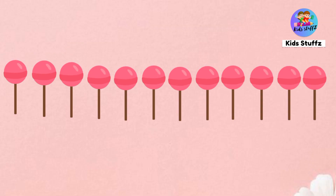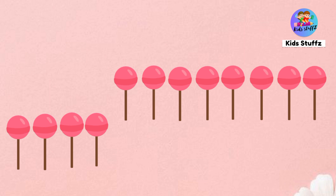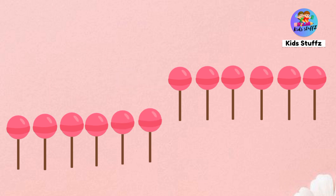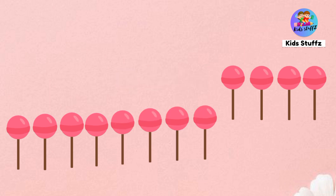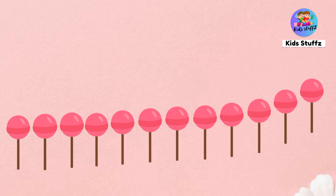Count the lollipops. 1, 2, 3, 4, 5, 6, 7, 8, 9, 10, 11, 12. There are 12 lollipops.